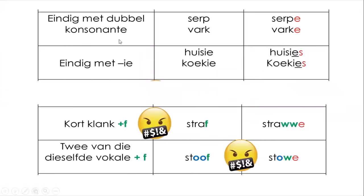As iets eindig met 'n dubbel konsonant - if a word ends with double consonants - like 'skerp' or 'verf' - we apply the normal basic rule and just add E. Skerp word skerpe. Verf word verwe.